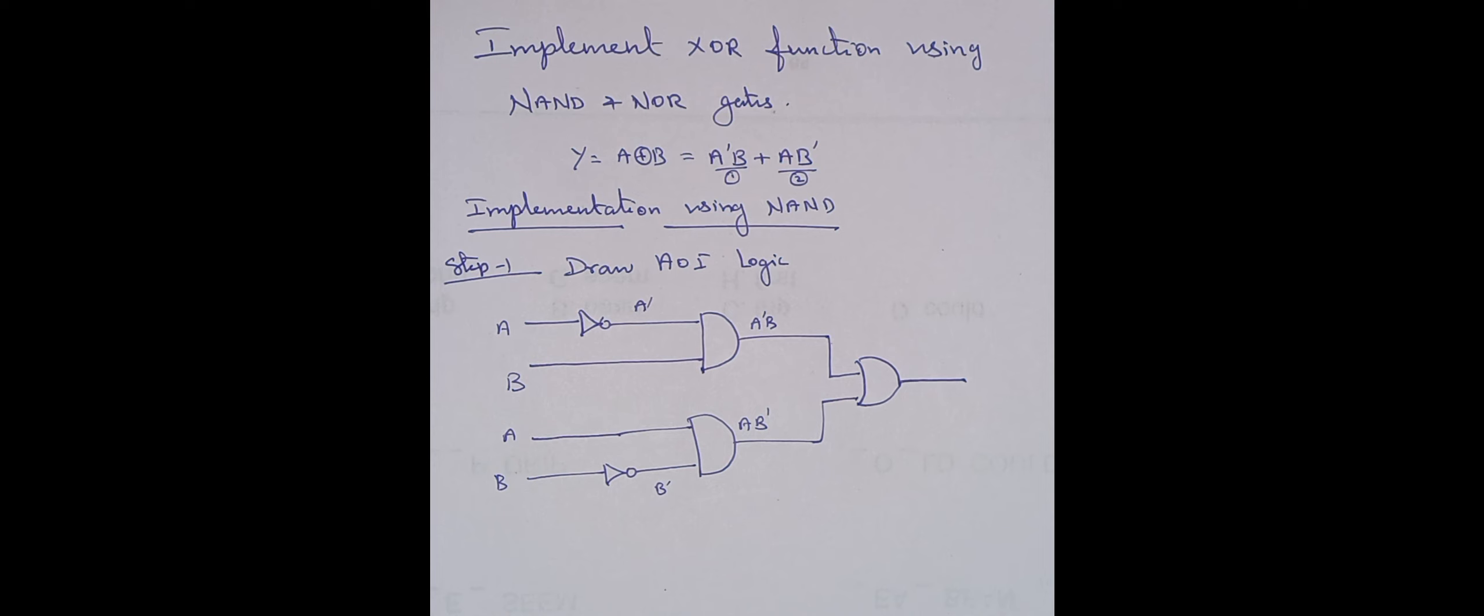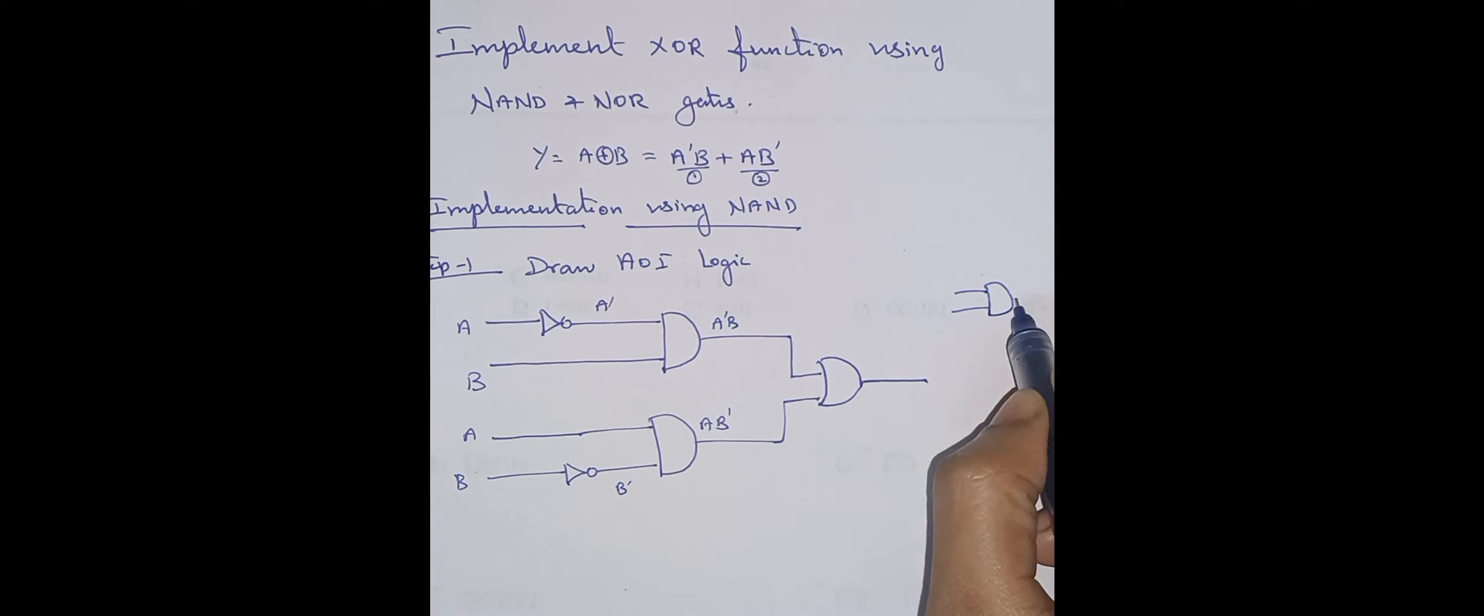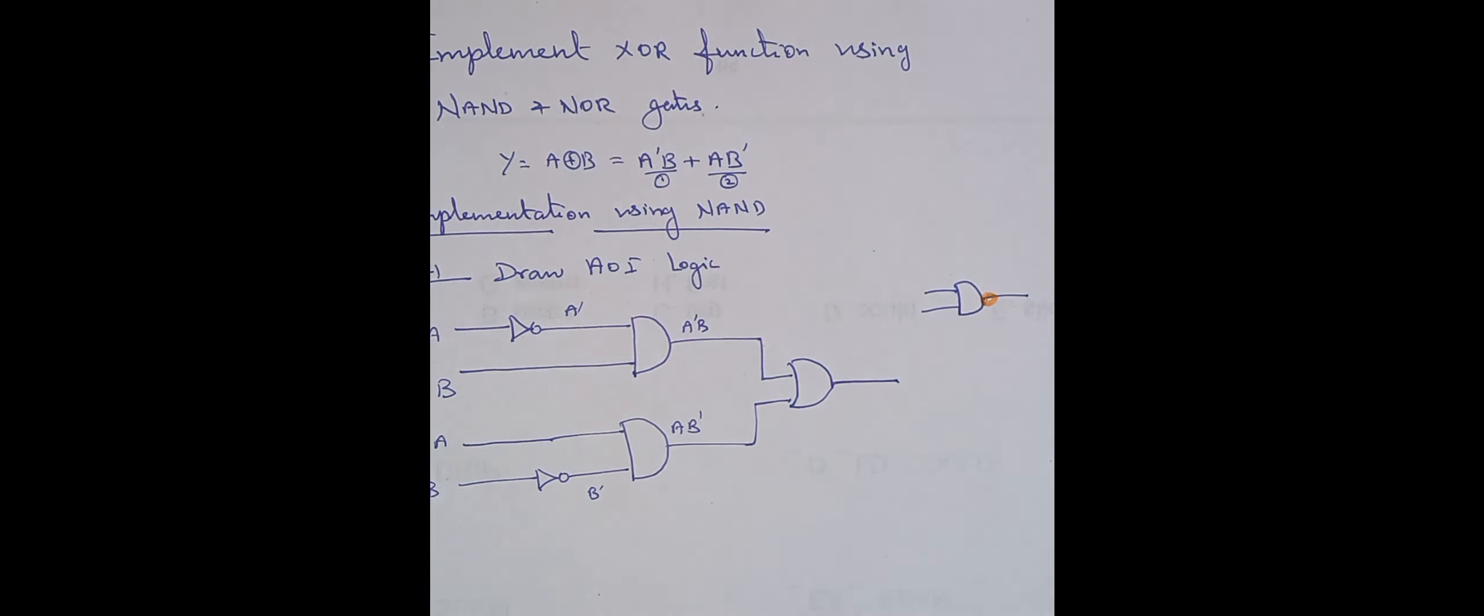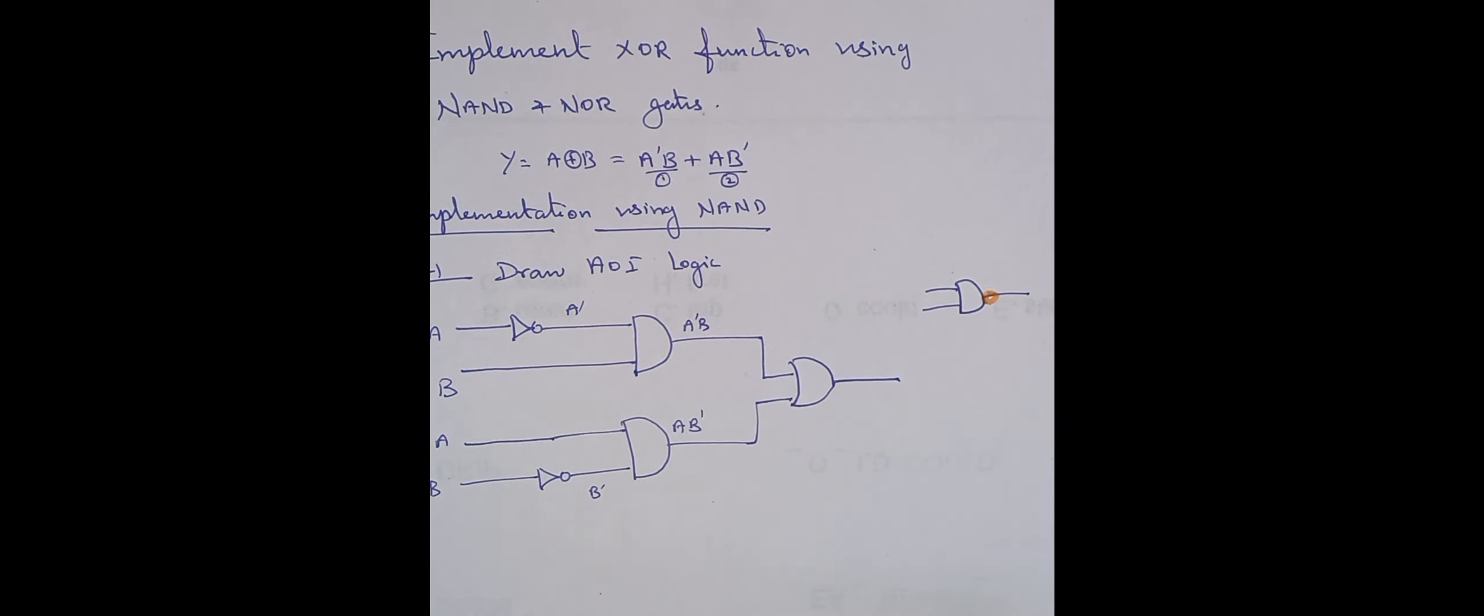Now we are going to convert this into NAND. If there is an AND physically, by just adding a bubble at the output, it becomes a NAND gate. If you keep a bubble at the output of the AND gate, you have to keep a bubble at the input of the OR gate. Step 2 is, I just add bubbles at the output of the AND gates.